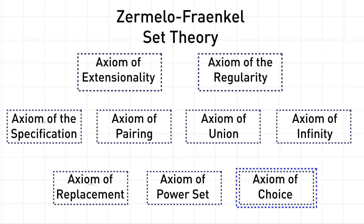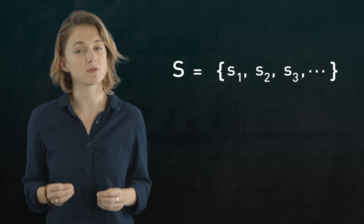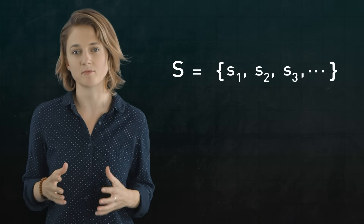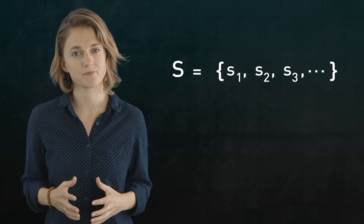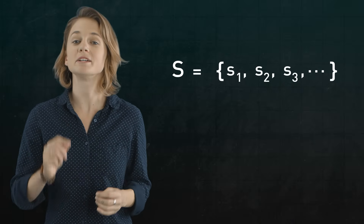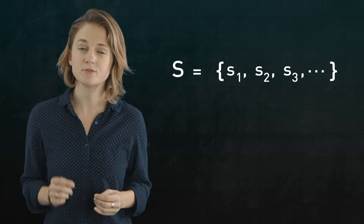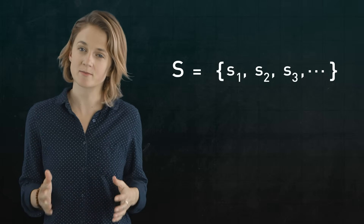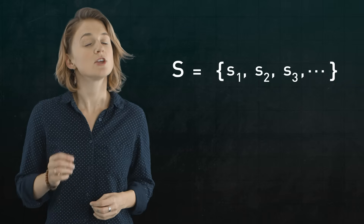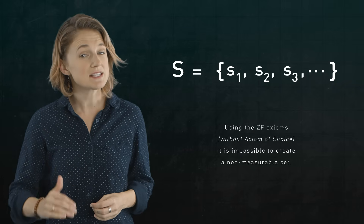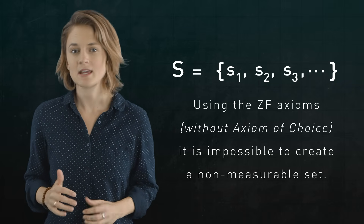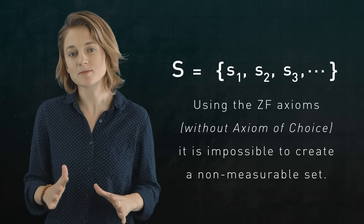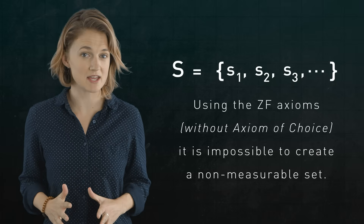Zermelo-Fraenkel set theory is the standard axiomatic basis for mathematics. There are nine basic axioms — technically two of these are schemas, which stand in for infinitely many axioms — and set theorists have spent the last century exploring what happens when you add other axioms, most notably the axiom of choice. The set S that we created is the most commonly presented non-measurable set. There are other options, but they all use the axiom of choice or a similar axiom.